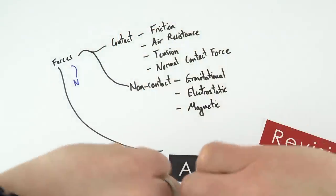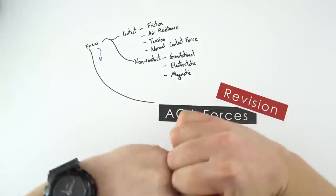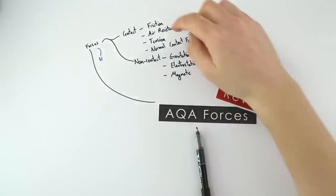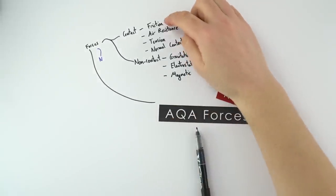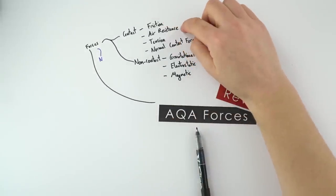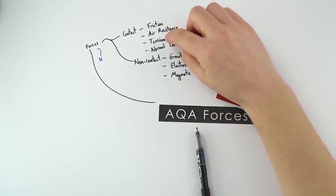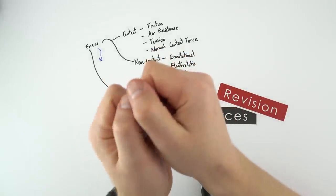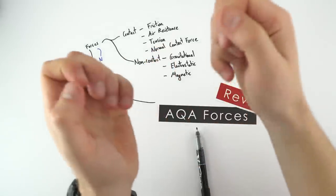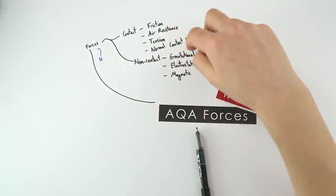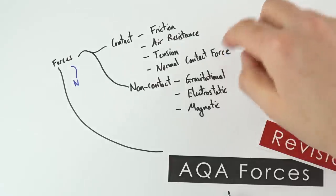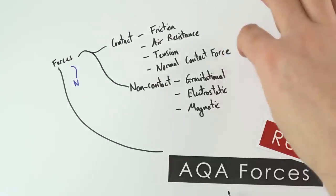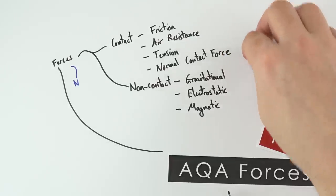Contact forces are where you have two surfaces in contact. So we're talking about friction, air resistance or drag. You've got tension, which is maybe when something is being pulled like a spring. And then normal contact force, which I'll come on to in a little bit.